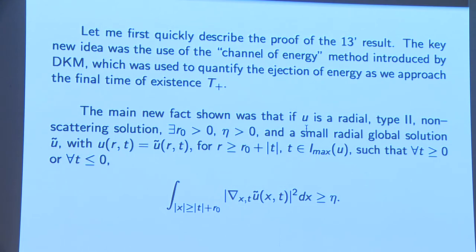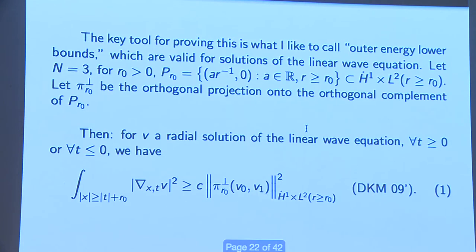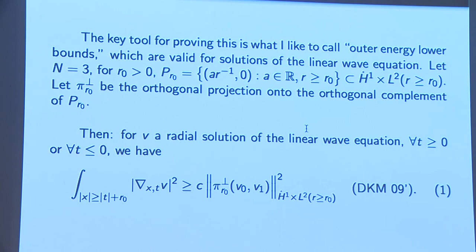There is a property of radial solutions of the linear wave equation in three space dimensions — an elementary property that D'Alembert could have proven. If you have a radial solution in the energy space, then either for all positive times or for all negative times, for any r₀ you choose, there is always some energy left over — a lower bound. There is one exception: solutions corresponding to the Newtonian potential 1/r, which outside the light cone is a proper solution. The real mathematical statement is that once you do the orthogonal projection to the complement of the Newtonian potential, this lower bound is true.